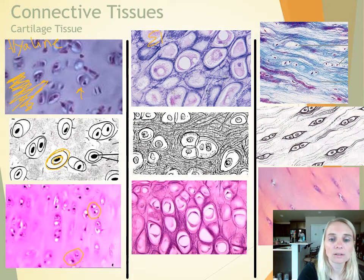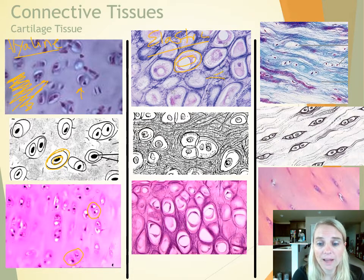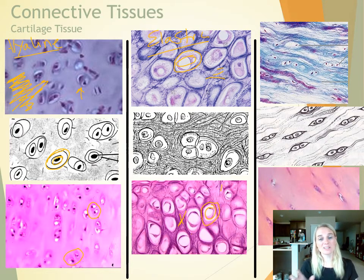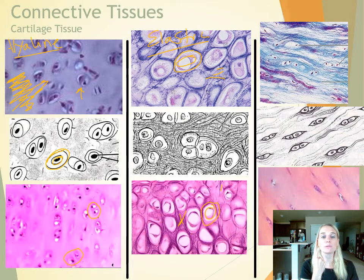Elastic cartilage has visible elastic fibers — dark-staining fibers visible within the matrix — alongside the lacunae with cells inside. It provides structure with flexibility and is found in the ear flap and the epiglottis, that little flap that closes over the trachea when you swallow. A helpful mnemonic: ear, epiglottis, elastic — they all start with E.